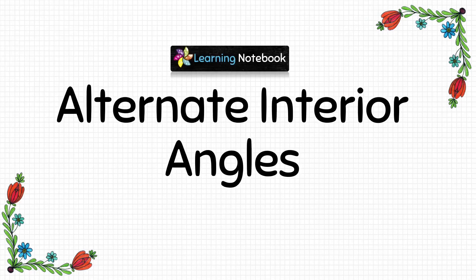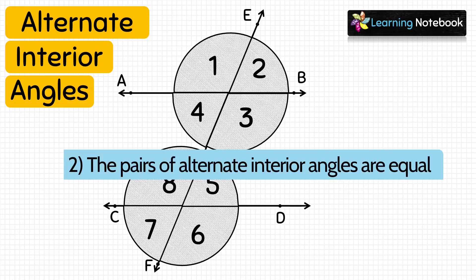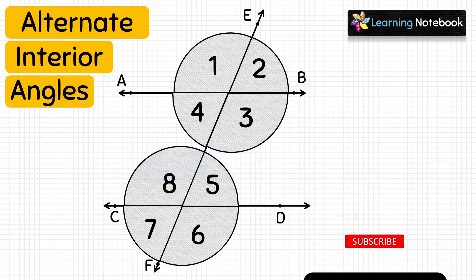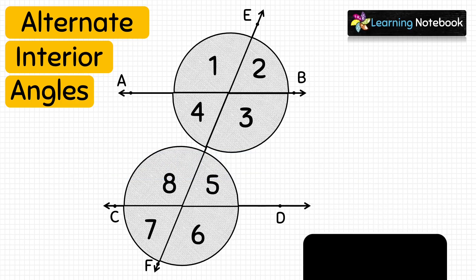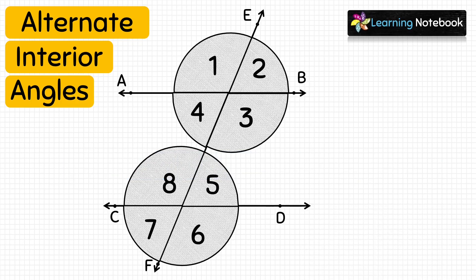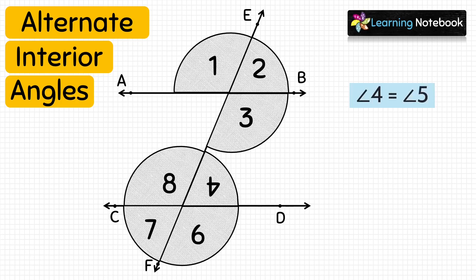Next is alternate interior angles. The second aim of this project is to prove that pairs of alternate interior angles are equal — that is, angle 4 equals angle 5 and angle 3 equals angle 8. Let's make another set of these 8 angles. Place the cutout of angle 4 on angle 5 — we see that angle 4 completely covers angle 5, meaning the first pair of alternate interior angles are equal.